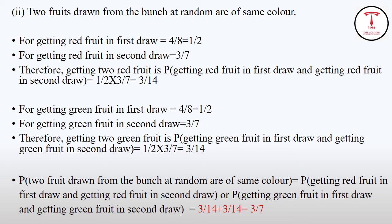Now, P of getting green fruit in first draw is 4/8. After the first draw, remaining green fruits is 3 and total number of fruits remaining is 7. Therefore, P of getting green fruit in second draw is 3/7.